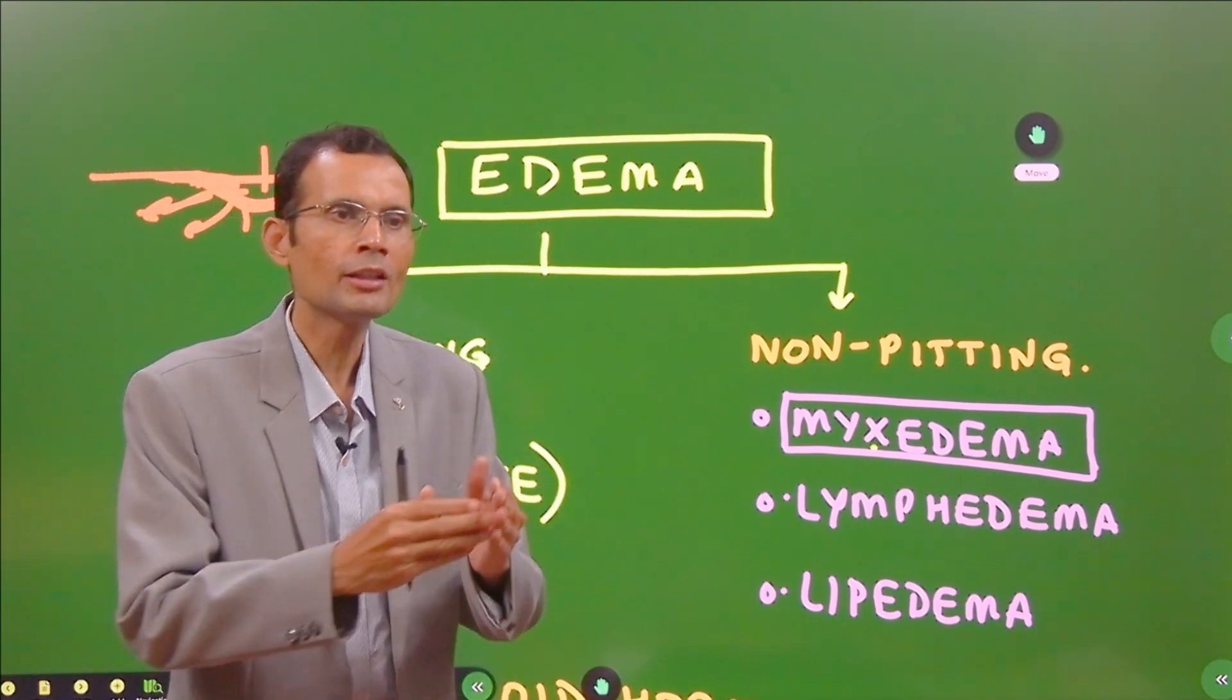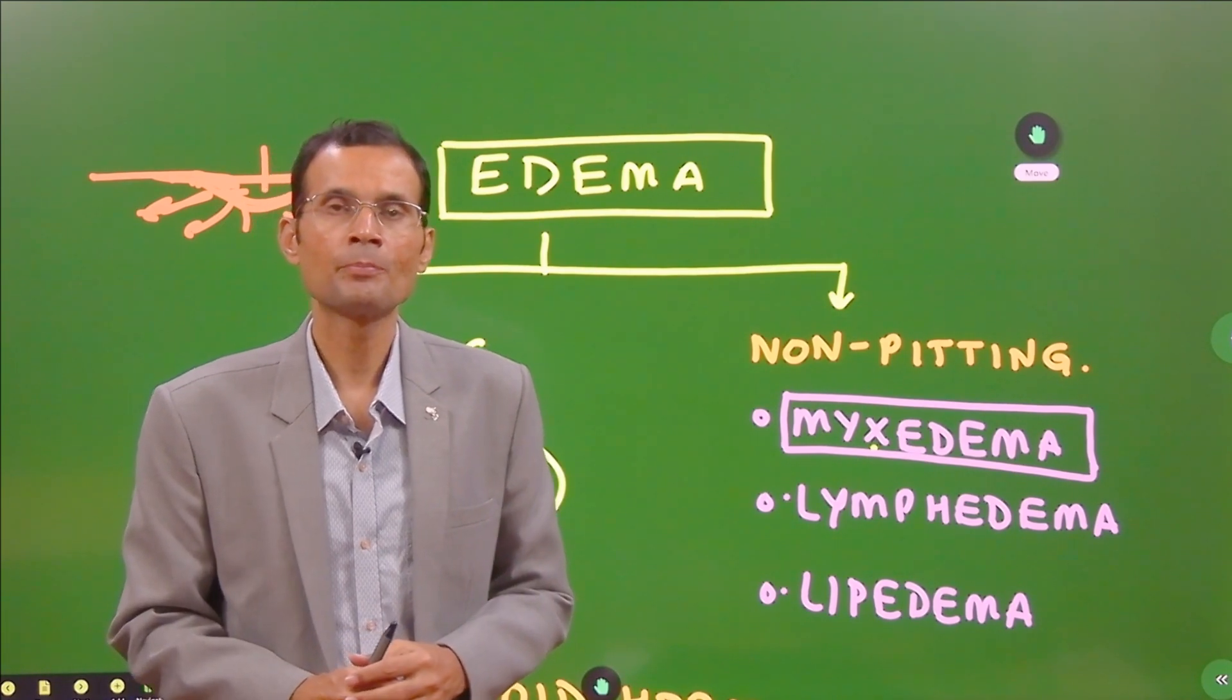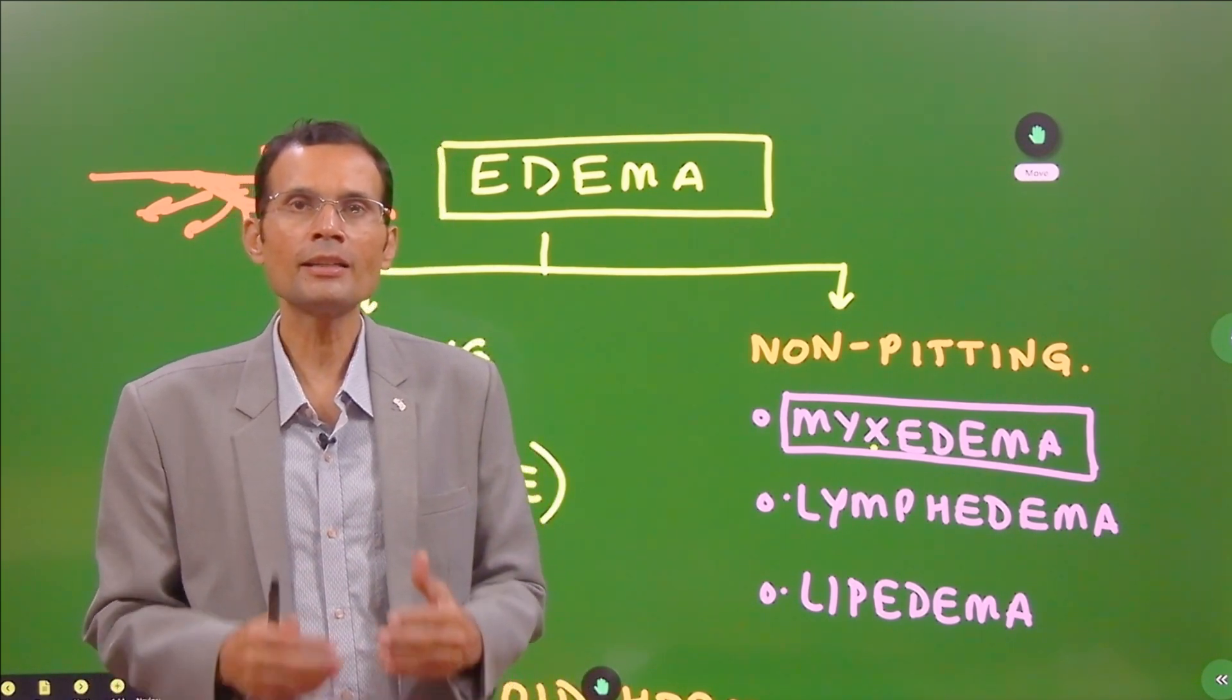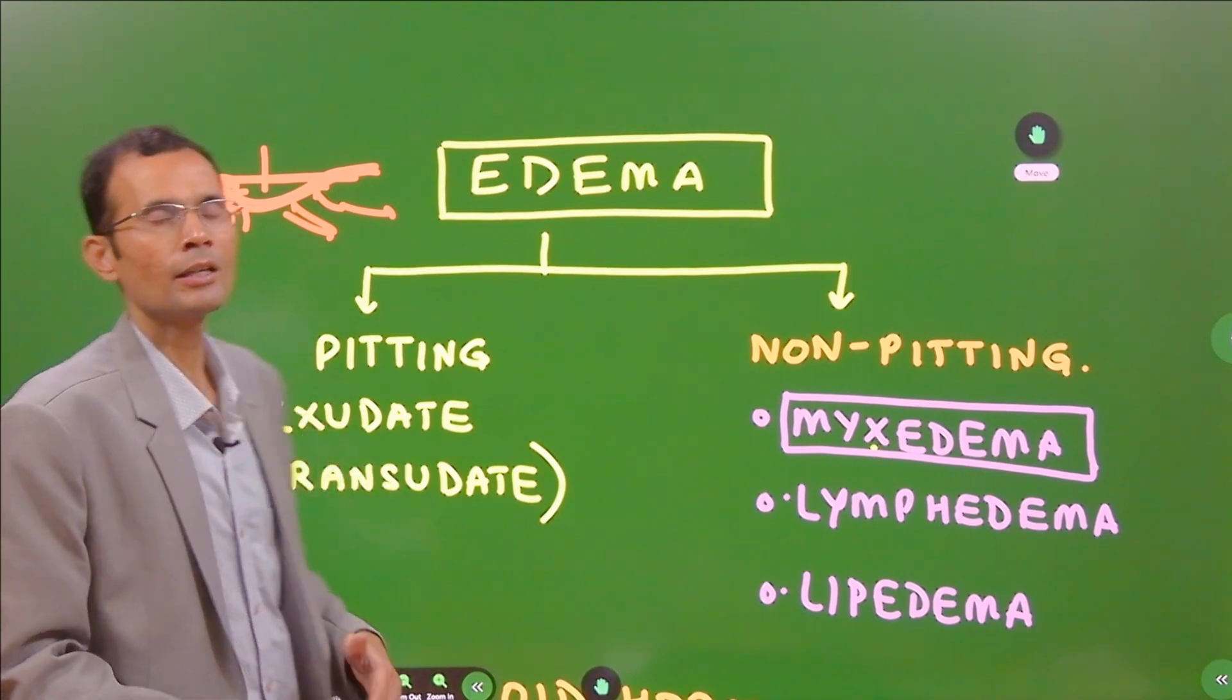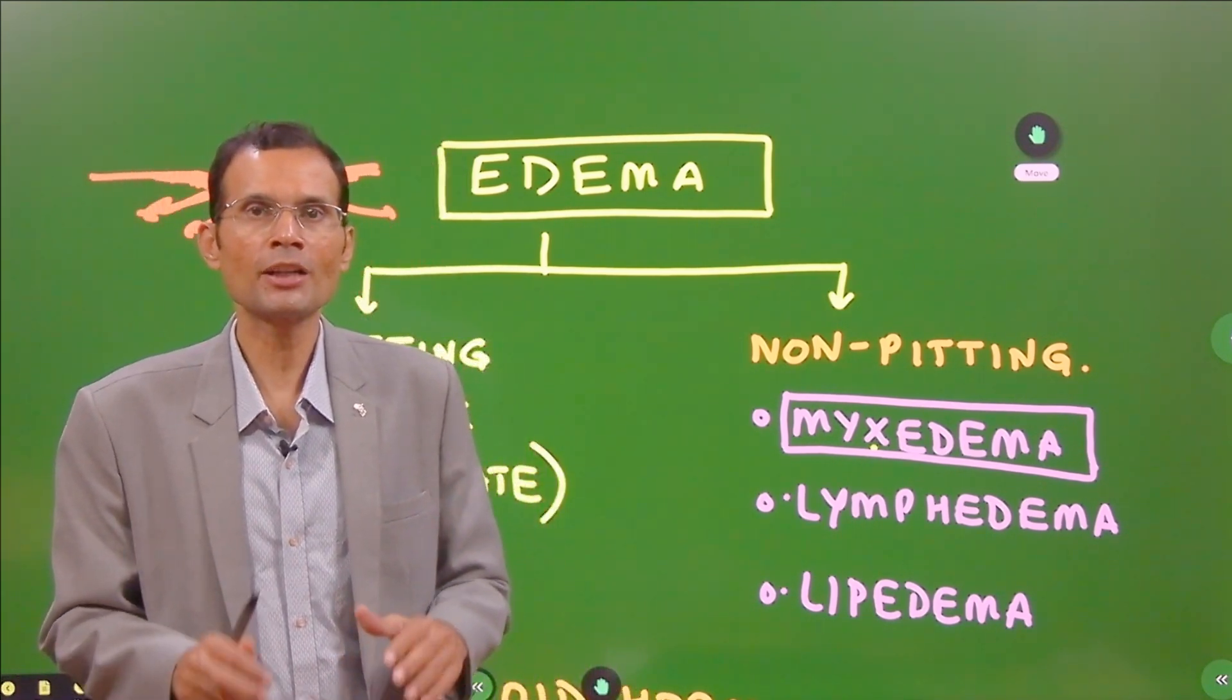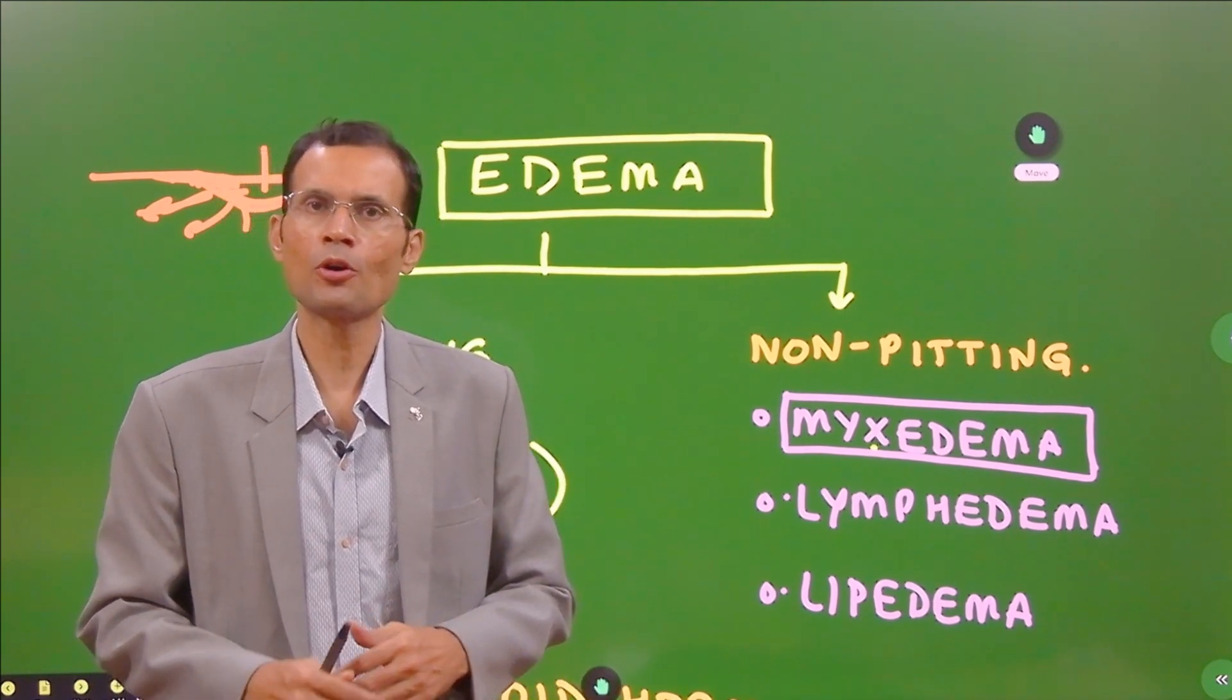The fluid will refill that region and the part will be as it was previously. So this is pitting type of edema, it's a watery type of edema. When does this happen? Inflammatory exudate is watery type or the transudate formation because of the imbalance of the starling forces. For example, congestive heart failure or nephrotic syndrome or any such reasons.